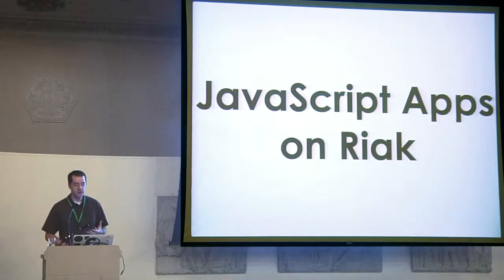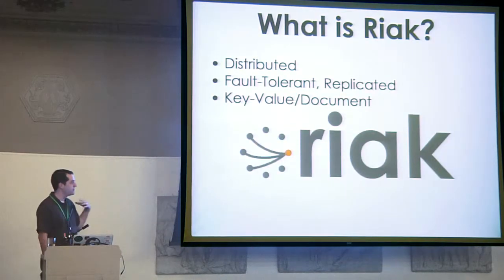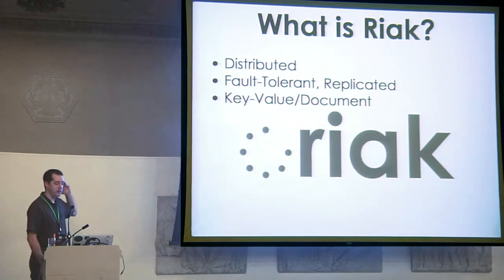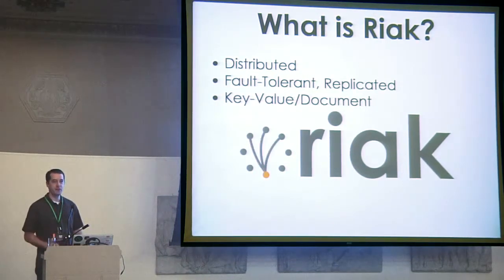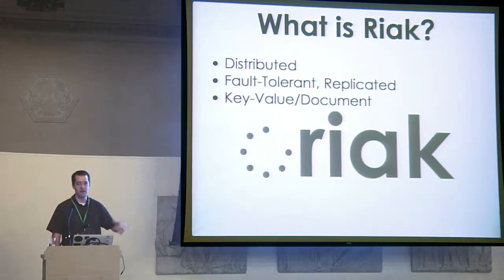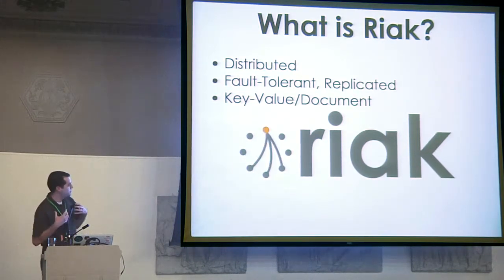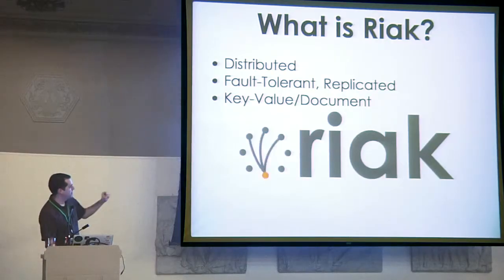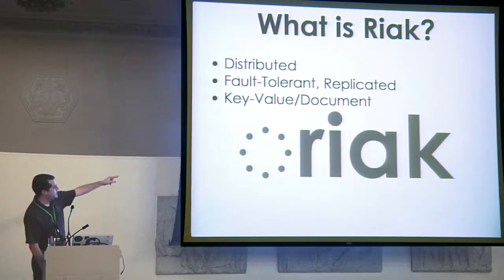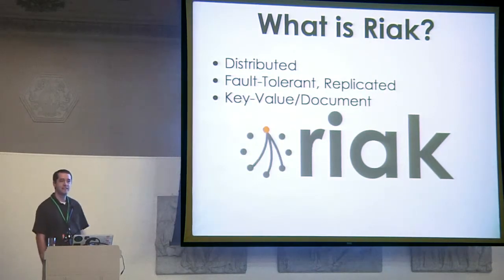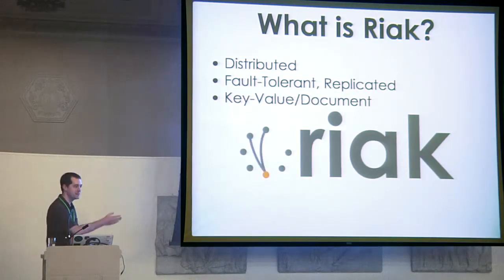I'm here today to talk to you about JavaScript apps on Riak. So what do we mean by that? What is Riak? You may not have heard of it. I usually use these three things: Riak is distributed, it's fault tolerant, replicated, key-value, document database. The best way to explain it is through this animated GIF made by the wonderful Matthias Meyer. It's a play on the Riak logo, and it basically shows that when you write to Riak, it's going to send out three copies of everything to nodes around the cluster. When a node goes away, you write to fallbacks, and when the node comes back, it transfers data back to the node that was lost. I think that's the best visual explanation of what Riak is. Thank you, Matthias — that was awesome.